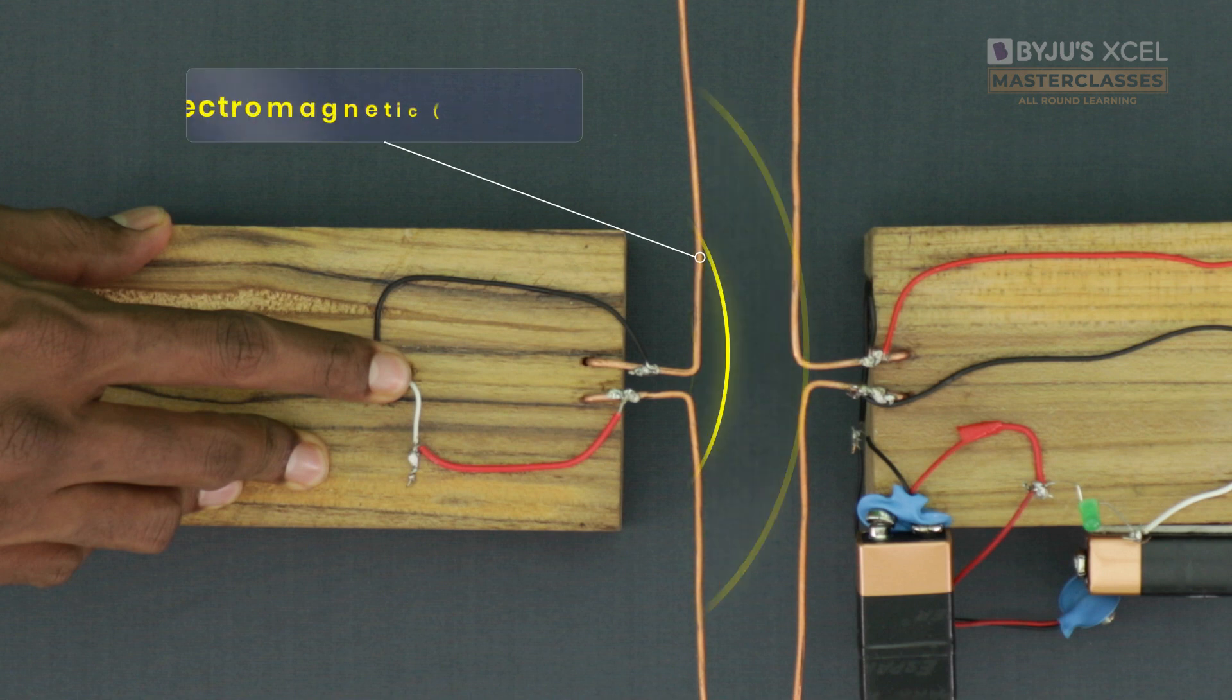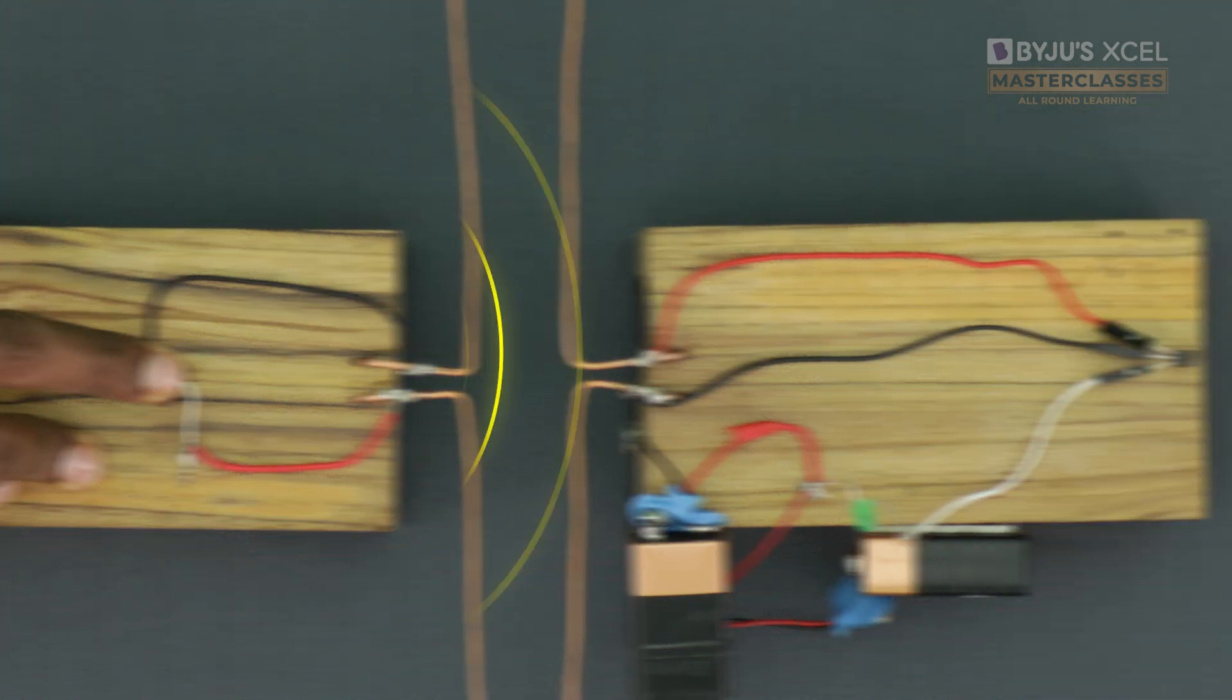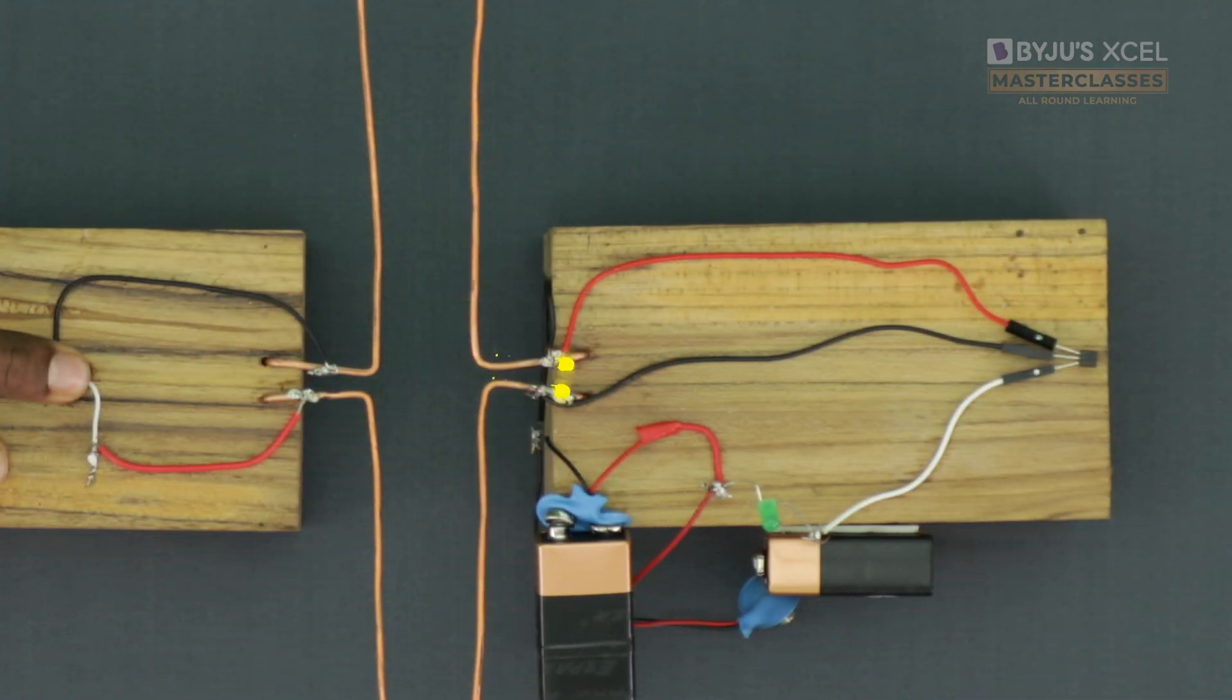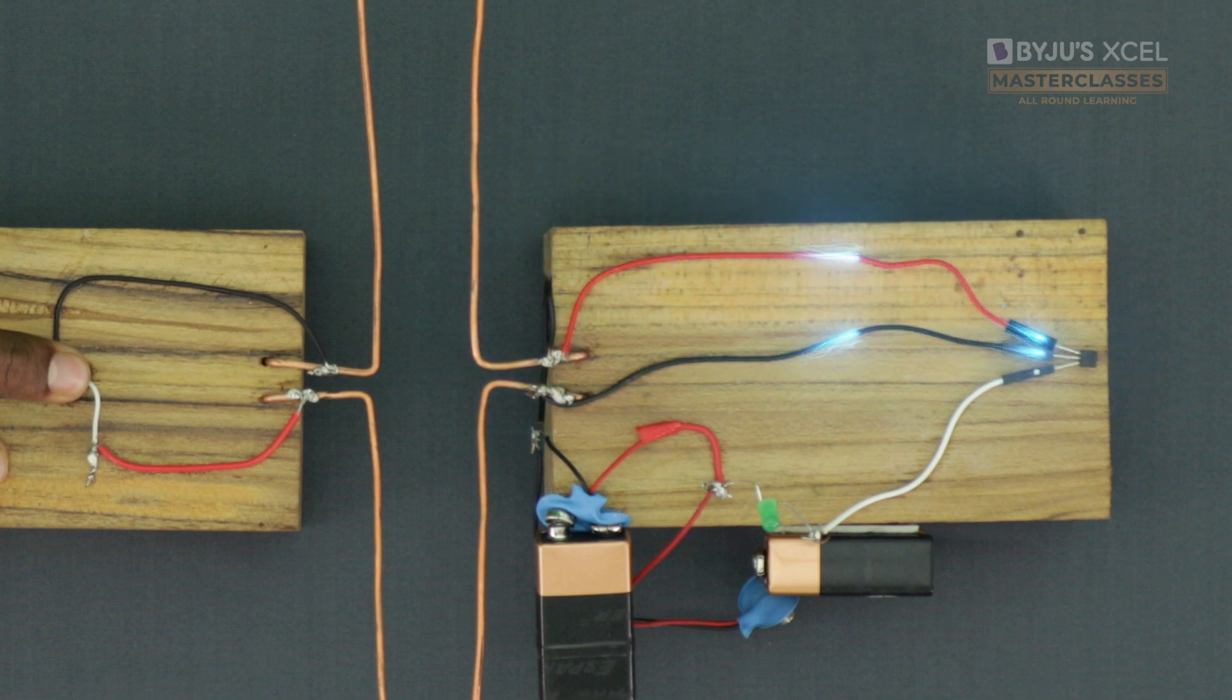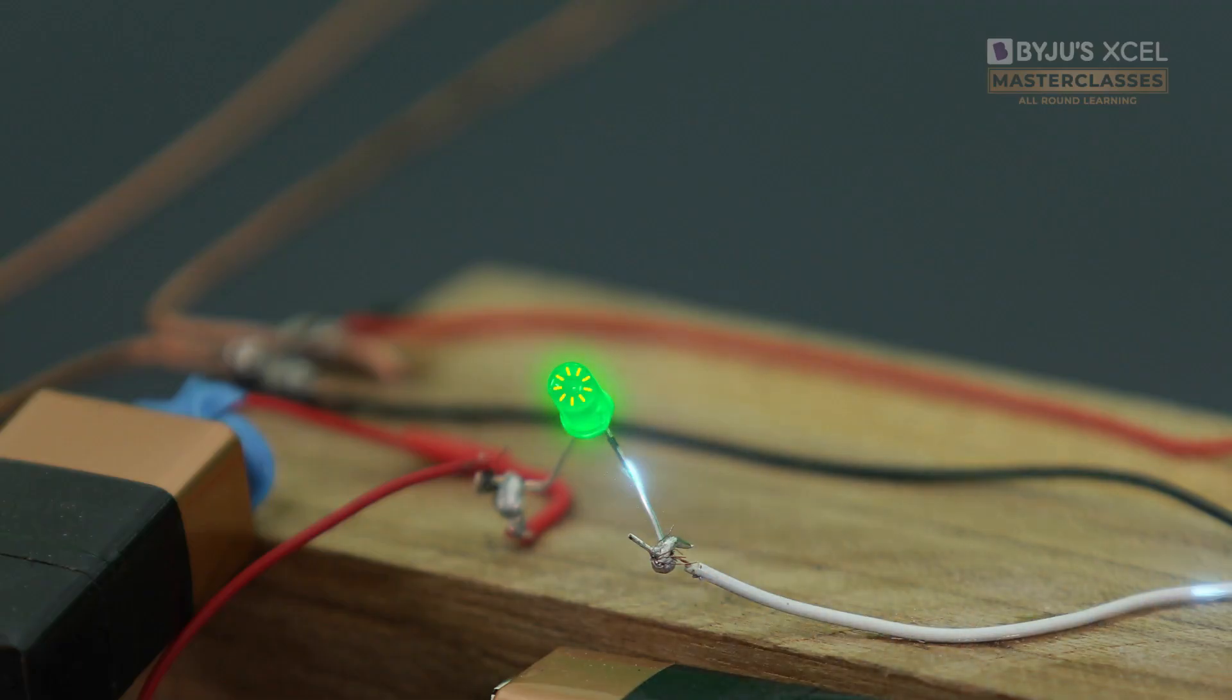which leads to the emission of electromagnetic waves or EM waves. These waves spread out at the speed of light through space and are picked up by the receiver. This energy creates an electric current in the receiver circuit, which causes the bulb to glow.